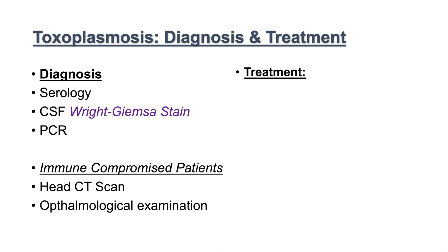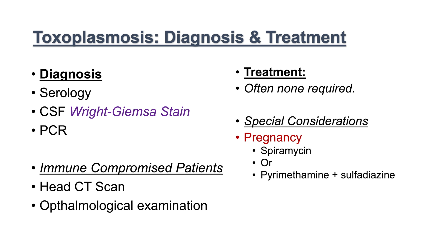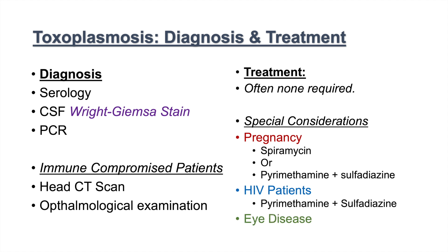How do we treat toxoplasmosis? Because oftentimes this is a benign, self-limited infection and individuals are often asymptomatic, we frequently do not require treatment. However, there are special considerations. During pregnancy, we would like to use spiramycin, or pyrimethamine and sulfadiazine. For HIV patients, we can also use pyrimethamine and sulfadiazine. For eye disease related to toxoplasmosis, we can use corticosteroids.